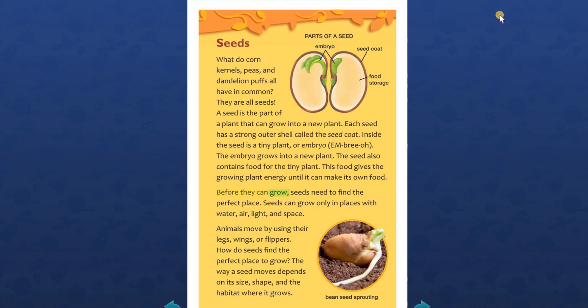Before they can grow, seeds need to find the perfect place. Seeds can grow only in places with water, air, light, and space. Animals move by using their legs, wings, or flippers. How do seeds find the perfect place to grow? The way a seed moves depends on its size, shape, and the habitat where it grows.